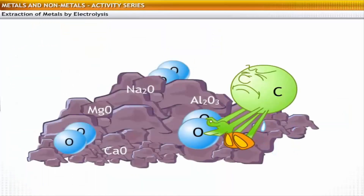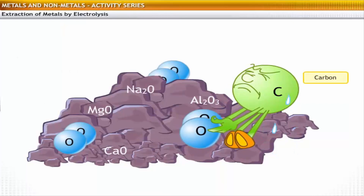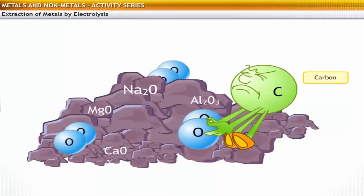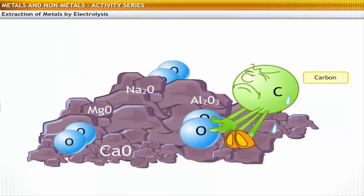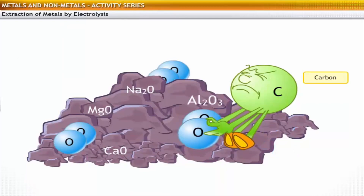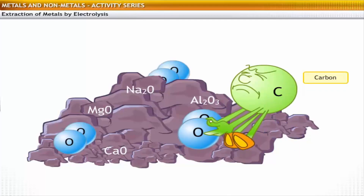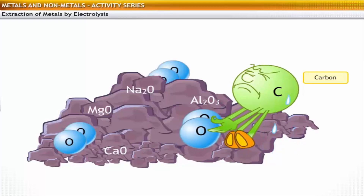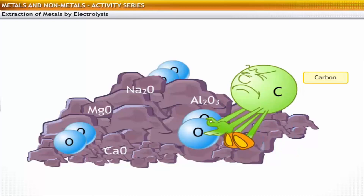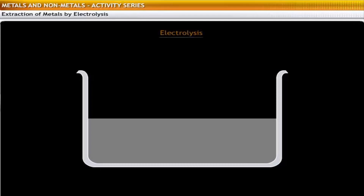For example, a reducing agent like carbon cannot reduce the oxides of metals like sodium, magnesium, calcium and aluminium, because they have more affinity for oxygen than carbon. Therefore, these metals are refined by electrolysis.